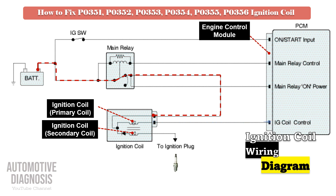As soon as the PCM cuts the control line, the magnetic field and primary circuit will collapse, and it will induce a high voltage in the secondary coil that must be used at the spark plug to ignite the air-fuel mixture inside the cylinder.